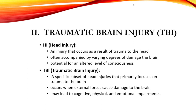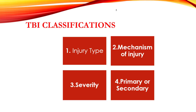With traumatic brain injury we are referring to brain injuries specifically, which ranges from mild such as concussions to severe traumatic brain injury. We can classify traumatic brain injuries based on their mechanism of injury, injury type, severity, and whether the injury is primary or secondary.